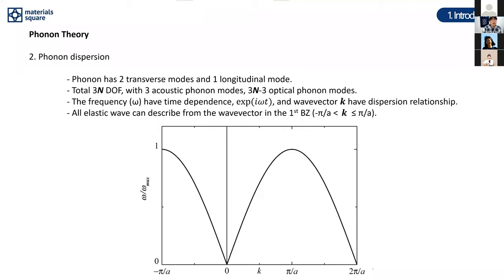So how do we calculate phonon dispersions? A phonon generally has two transverse modes and one longitudinal mode. The total degrees of freedom are 3N, with three acoustic phonons and 3N minus three optical phonon modes. The frequency omega has a time dependence expressed as e^(iωt), and the wave vector k has a dispersion relation. All these waves are discrete within the first Brillouin zone.